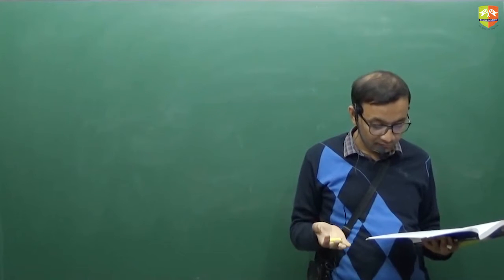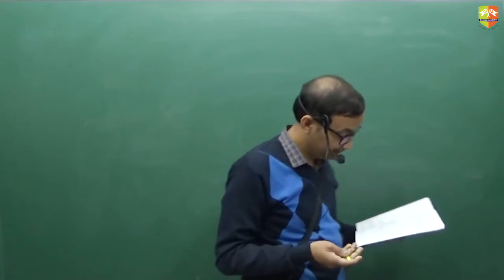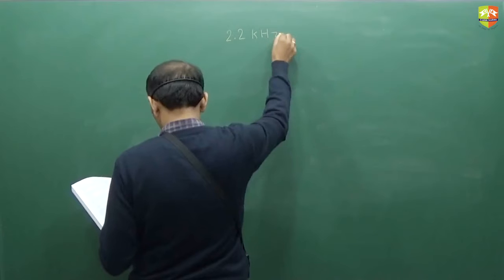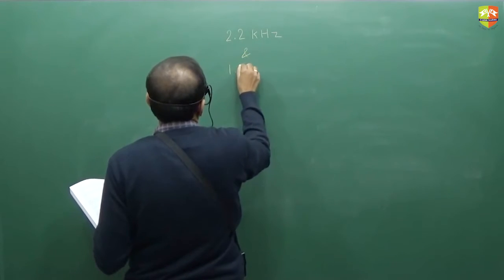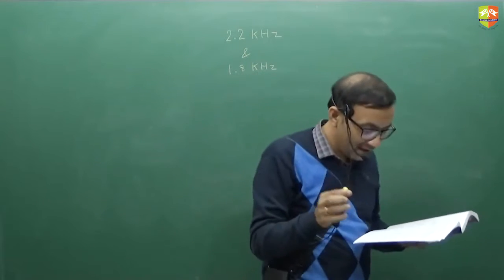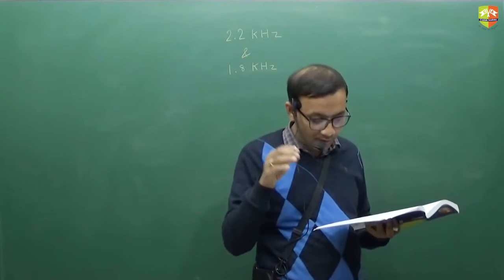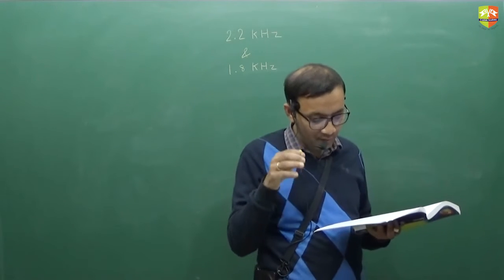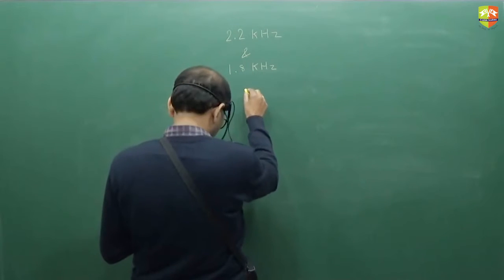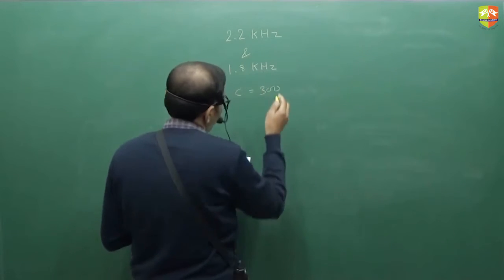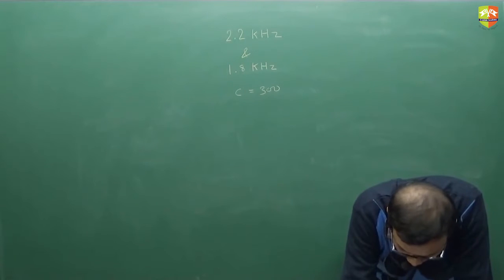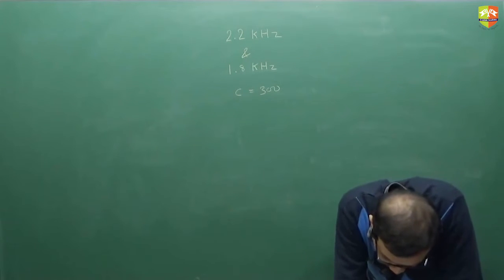So whistling train approaches a junction. An observer standing at the junction observes the frequency 2.2 kHz and 1.8 kHz of approaching and receding train. The speed of the train is how much? Speed of sound is 300. Speed of train is what? 30. So is it around 1 by 10 speed of sound?